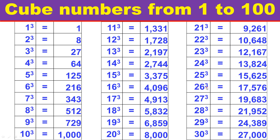25 cube equals 15625. 26 cube equals 17576. 27 cube equals 19683. 28 cube equals 21952. 29 cube equals 24389. 30 cube equals 27000.